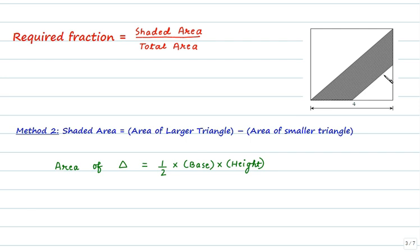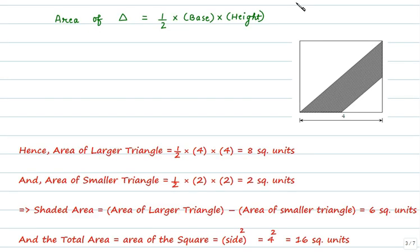Area of any triangle is equal to half base into height. Hence area of the larger triangle is equal to 1/2 × 4 × 4 that is 8 square units and area of smaller triangle is equal to 1/2 × 2 × 2 that is 2 square units.